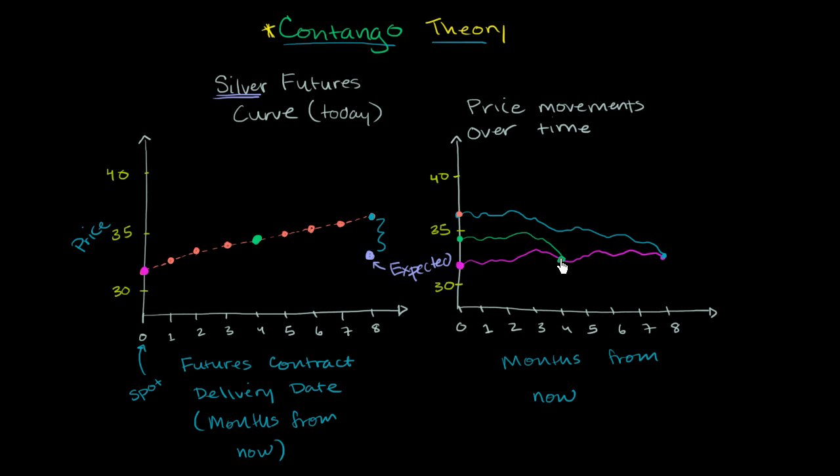it has to converge to the spot price. Otherwise, people could make free money on that day. And so the delivery date eight months out has to converge to the spot price eventually. And so what you see is because the spot price hasn't moved up a lot, you see this downward converging of the different futures prices.